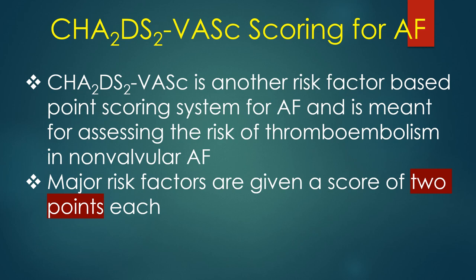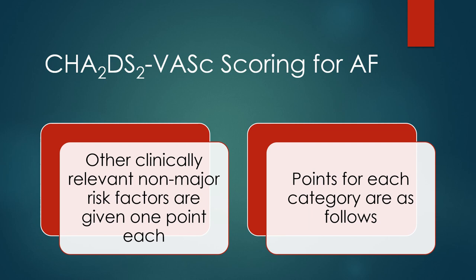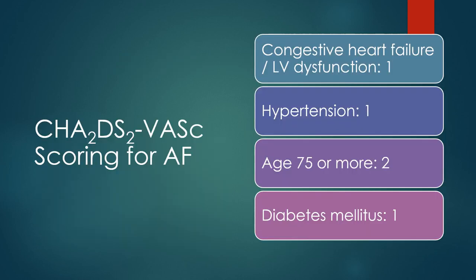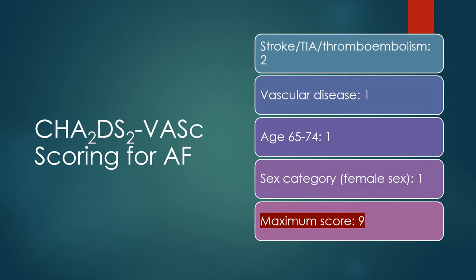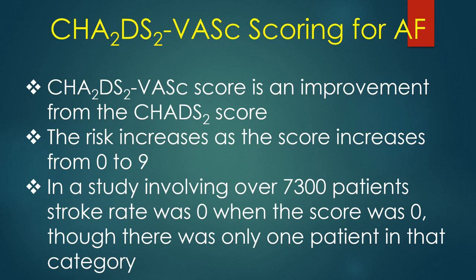CHADS-VASC is a risk factor-based point scoring system for non-valvar AF to assess thromboembolism risk. Major risk factors are given 2 points each, and other clinically relevant non-major risk factors are given 1 point each. The scoring is: congestive heart failure or LV dysfunction 1, hypertension 1, age ≥75 years 2, diabetes mellitus 1, stroke/TIA/thromboembolism 2, vascular disease 1, age 65–74 years 1, female sex 1. Maximum score is 9.